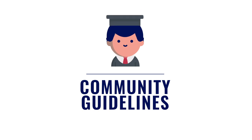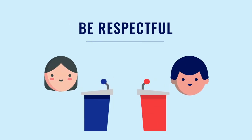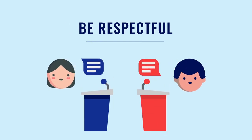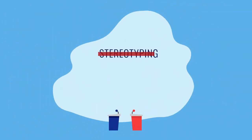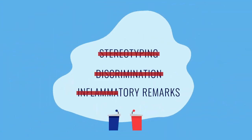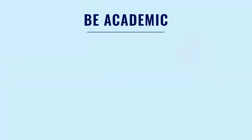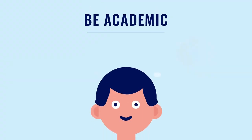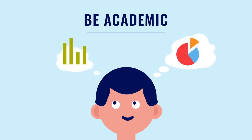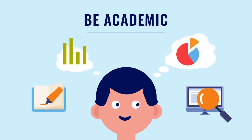Here's how to do that. An academic, informed debate is respectful of each other's arguments using civil discourse. Avoid negativity such as stereotyping, discrimination, or inflammatory remarks. Give some thought to your arguments and avoid logical fallacies. Cite evidence such as sources and data to support your arguments.